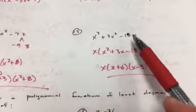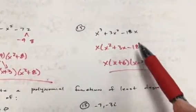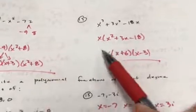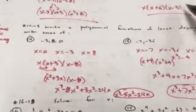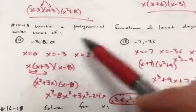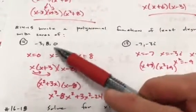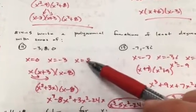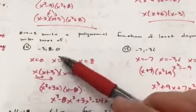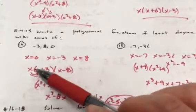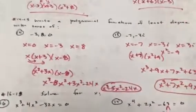For number 13, take out the x they have in common, then ask: what multiplies to negative 18 and differs by 3? That's positive 6 and negative 3, and that x stays on the outside. For a polynomial of least degree with zeros of negative 3, 8, and 0: x equals 0, x equals negative 3, x equals 8 — so the factors are x, (x + 3), and (x − 8). Then distribute and FOIL.